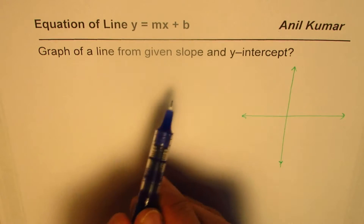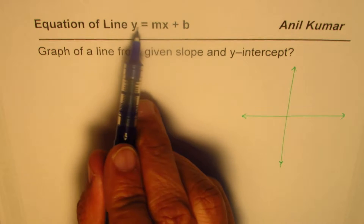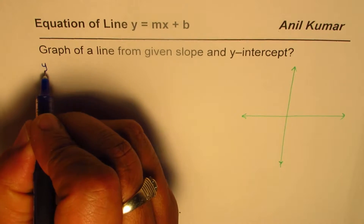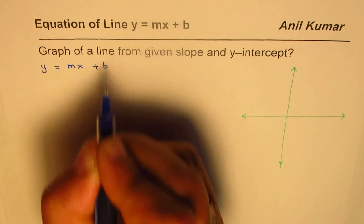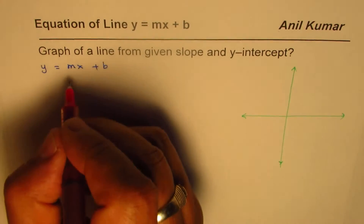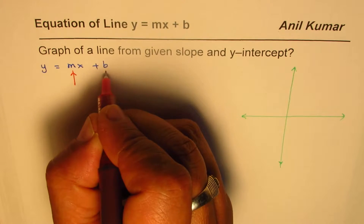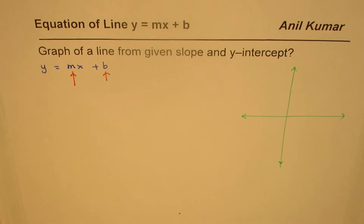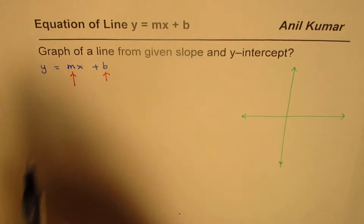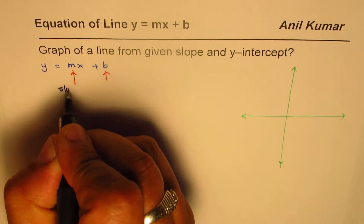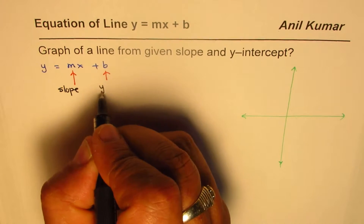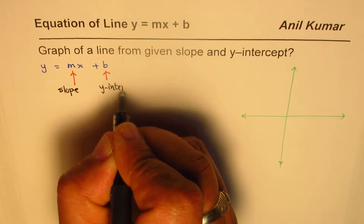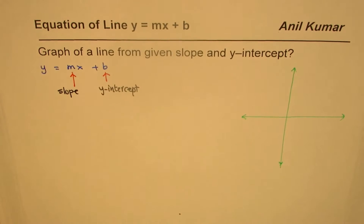We'll learn how to graph a line from a given slope and y-intercept. When we have an equation in the form y = mx + b, M is the slope and B is the y-intercept. Let's see how to sketch the graph of a line when we know both the slope and the y-intercept.